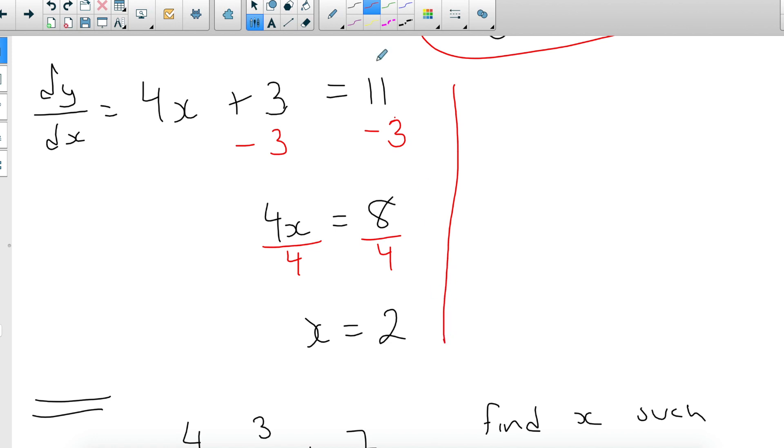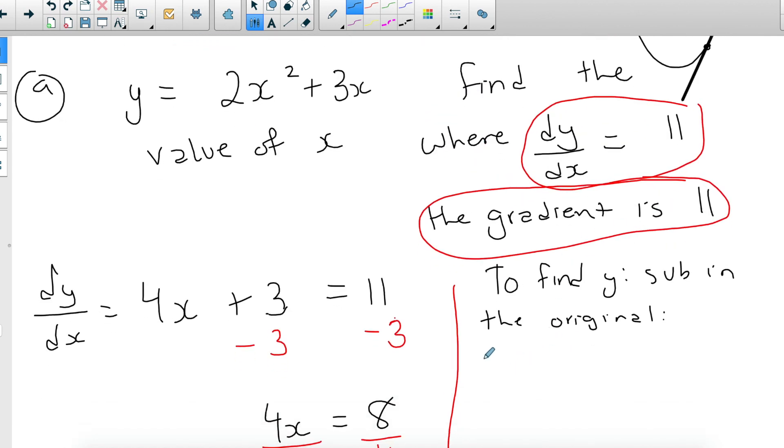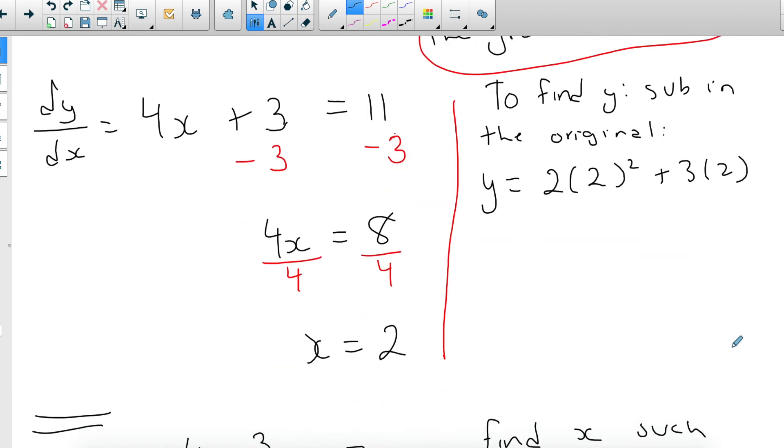So to find y, you sub in the original. So you go, well, if my x is 2, then the y will be 2x² plus 3x. And the 2 comes from—well, we found the 2 here. So 2 squared—remember, you're going to do 2 squared first—so this will be 4, and then 3 times 2, which is 6. 2 times 4 is 8 and 6, and that will be 14.